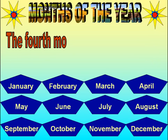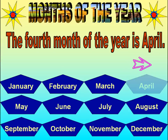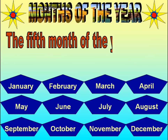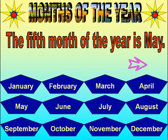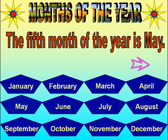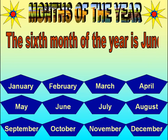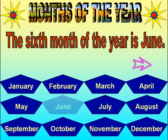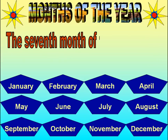The fourth month of the year is April. The fifth month of the year is May. The sixth month of the year is June. The seventh month of the year is July.